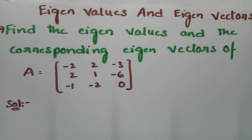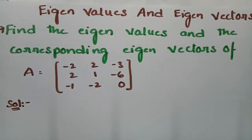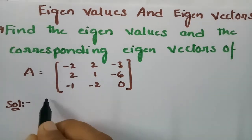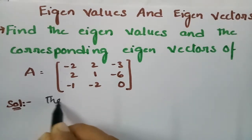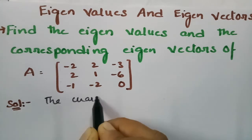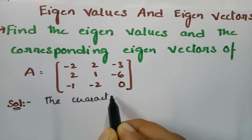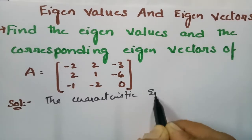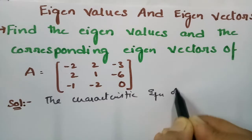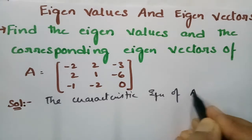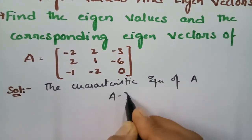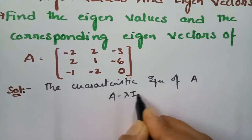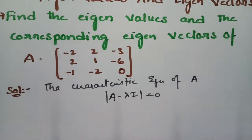In this problem we have to find the eigenvalues and the corresponding eigenvectors of the given matrix. First of all, the characteristic equation of matrix A is |A minus lambda I| is equal to 0.